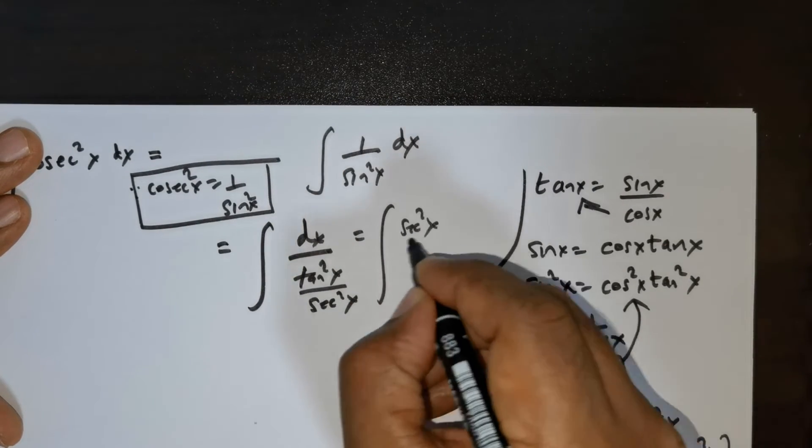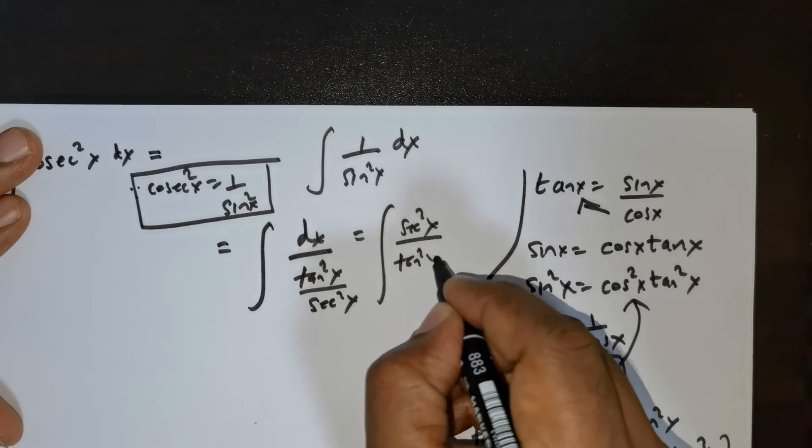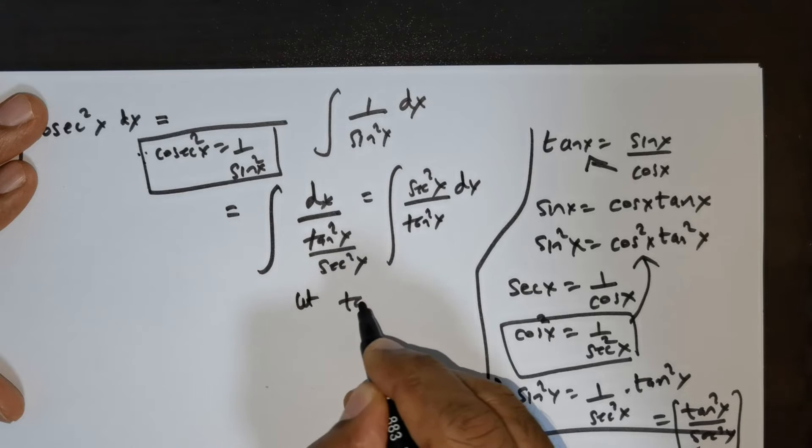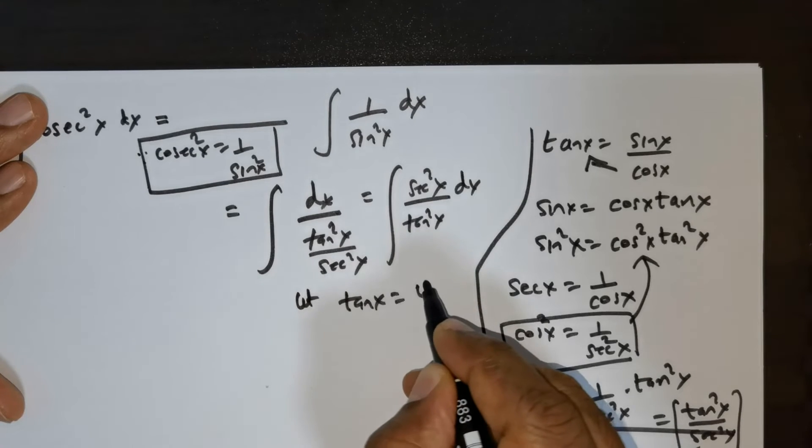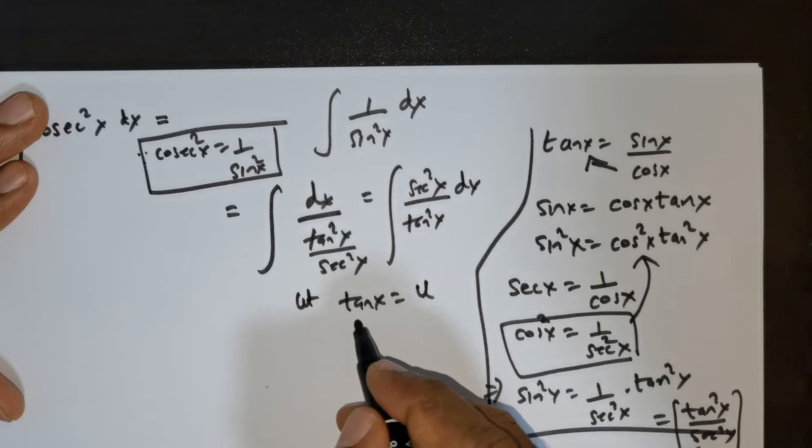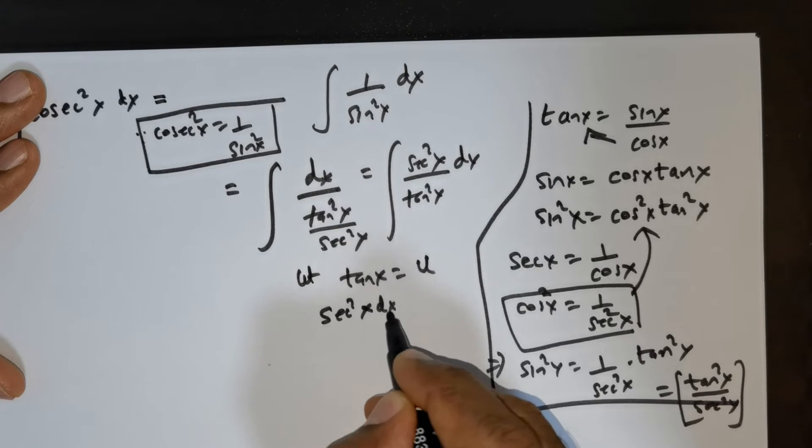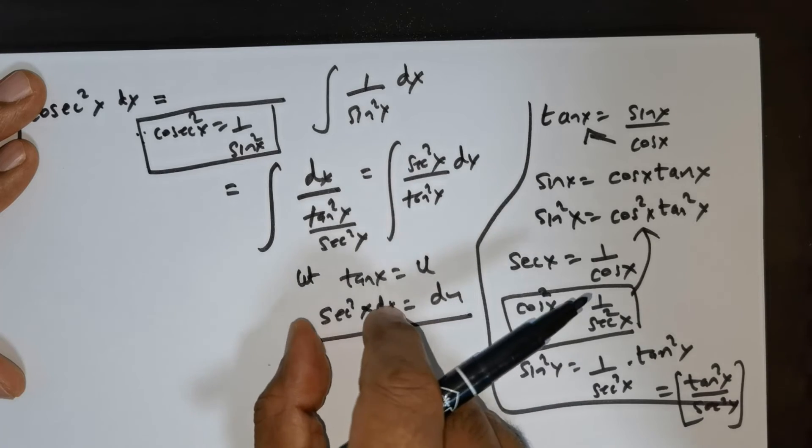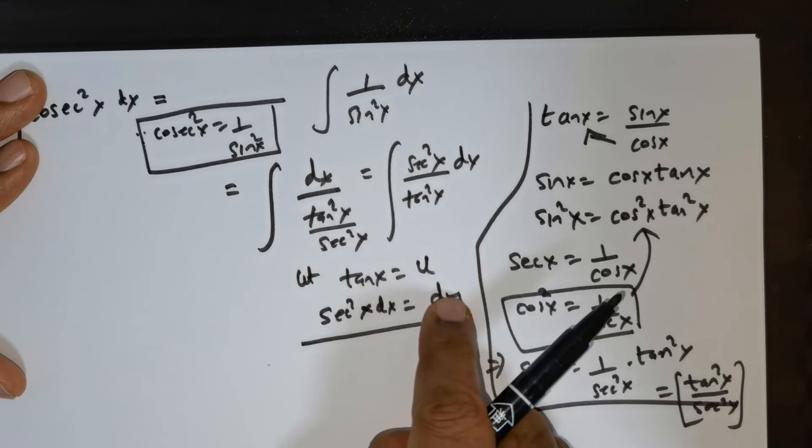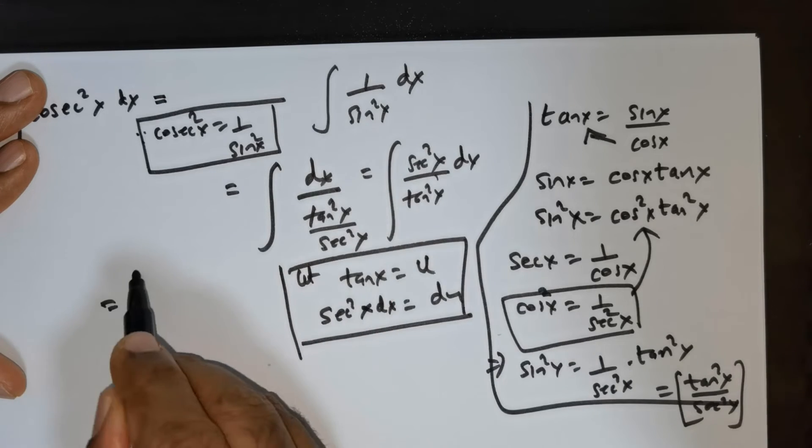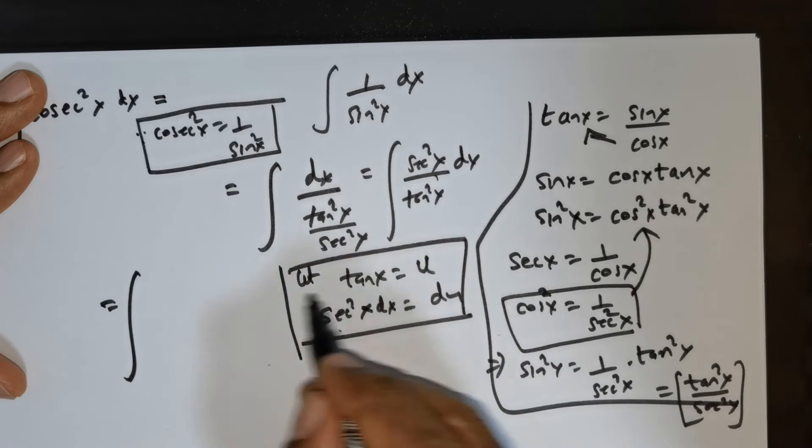Now let me take tan x is equal to u. If you differentiate this, you get secant squared x dx is equal to du. So in place of what you see here, substitute this. This can be rewritten as integral du over u squared.